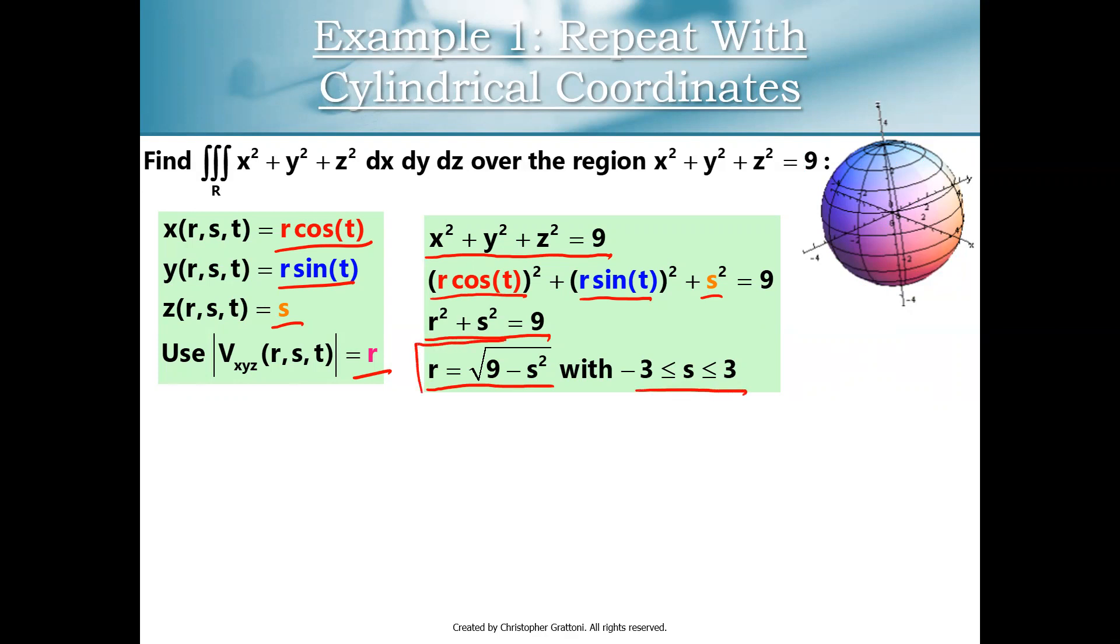Now, what does this R equals the square root of 9 minus s squared actually say? Well, it basically says s is kind of like our z coordinate, right? s is depth, its height, its altitude. So what we're told is that when s is negative 3, when we're at the lowest point on our sphere, the radius of that circular cross section is going to be 9 minus 9, which is 0. So we have a south pole of our globe.